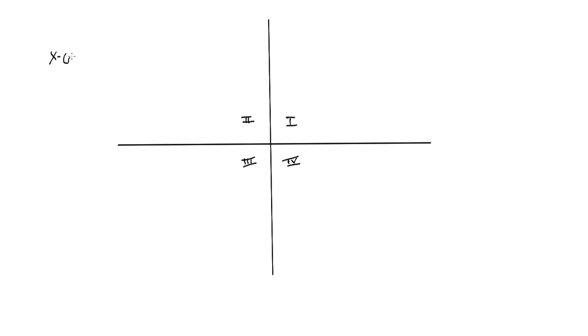First we need to remind ourselves what the trig functions are with respect to coordinates. We're talking about the unit circle, but this will apply to all coordinates and not just those on the unit circle. My x value is cosine, my y value is sine, y over x is tan, x over y is cotan, the reciprocal of cosine is secant, and the reciprocal of sine is cosecant.